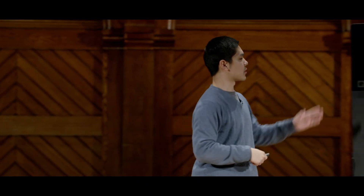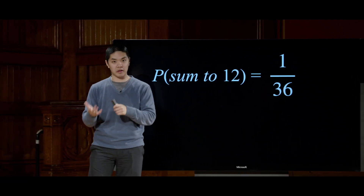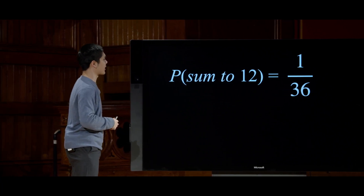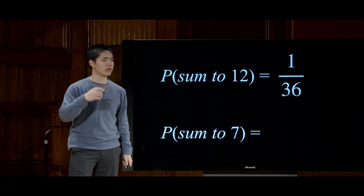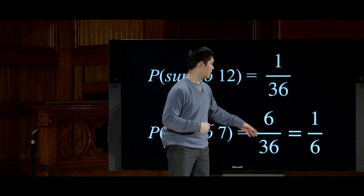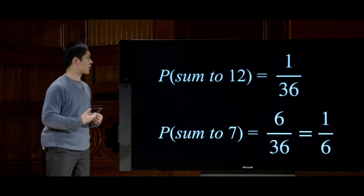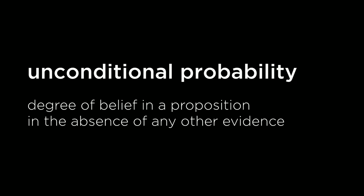We can represent these ideas more formally. The probability we sum to 12 is 1/36, and the probability we sum to 7 is 6/36, or 1/6. These sorts of judgments — figuring out in the abstract what is the probability that something takes place — are known as unconditional probabilities: some degree of belief in a proposition in the absence of any other evidence.